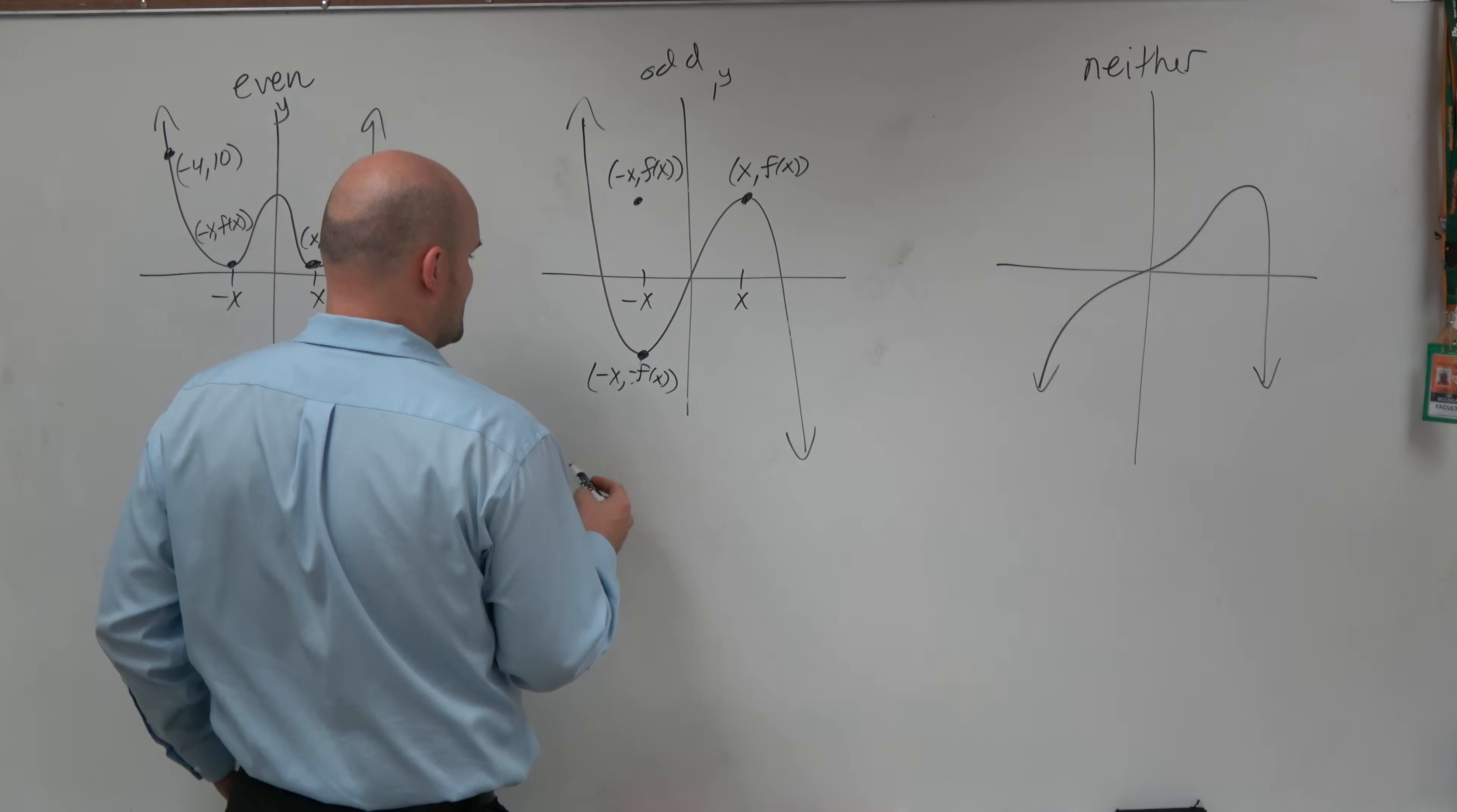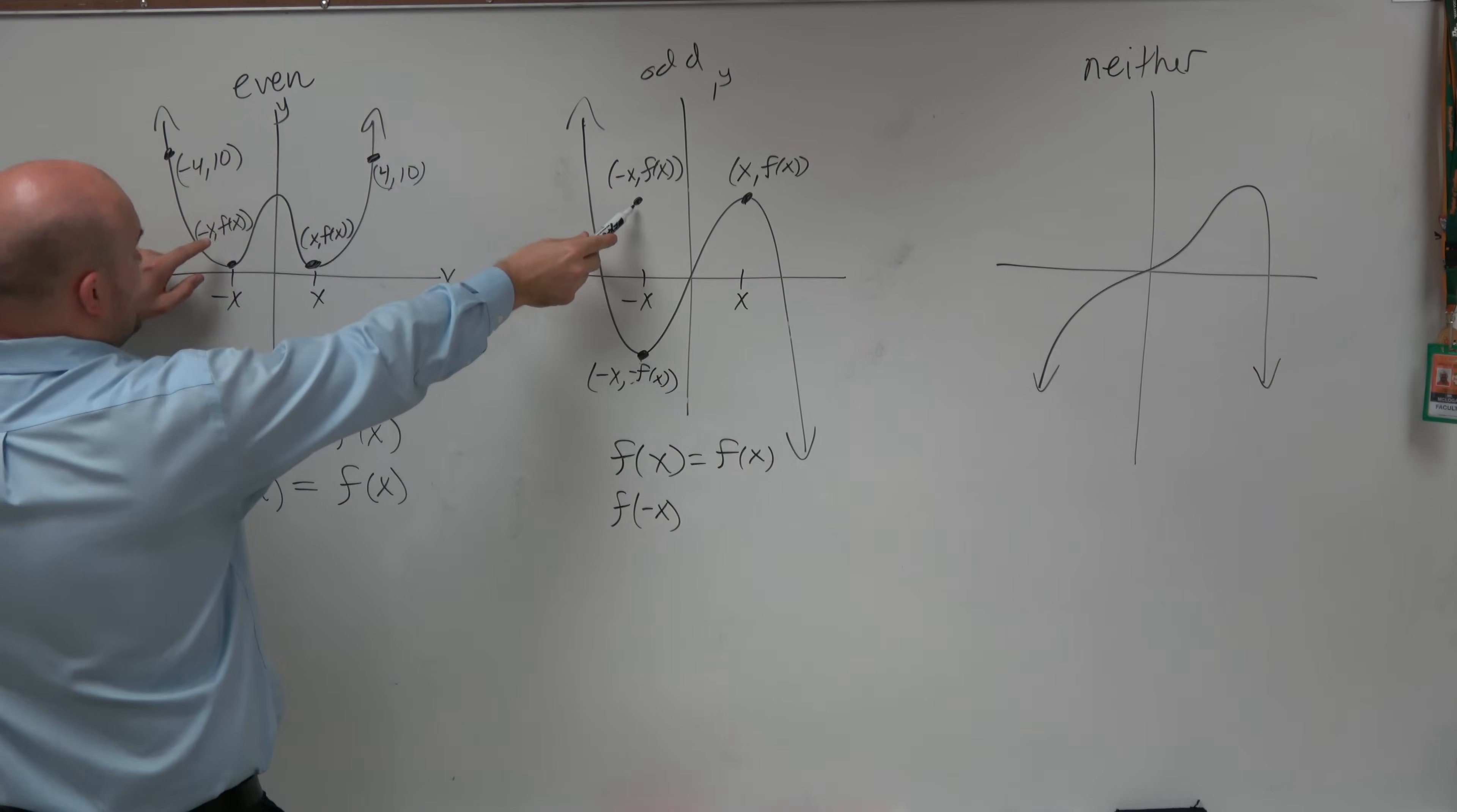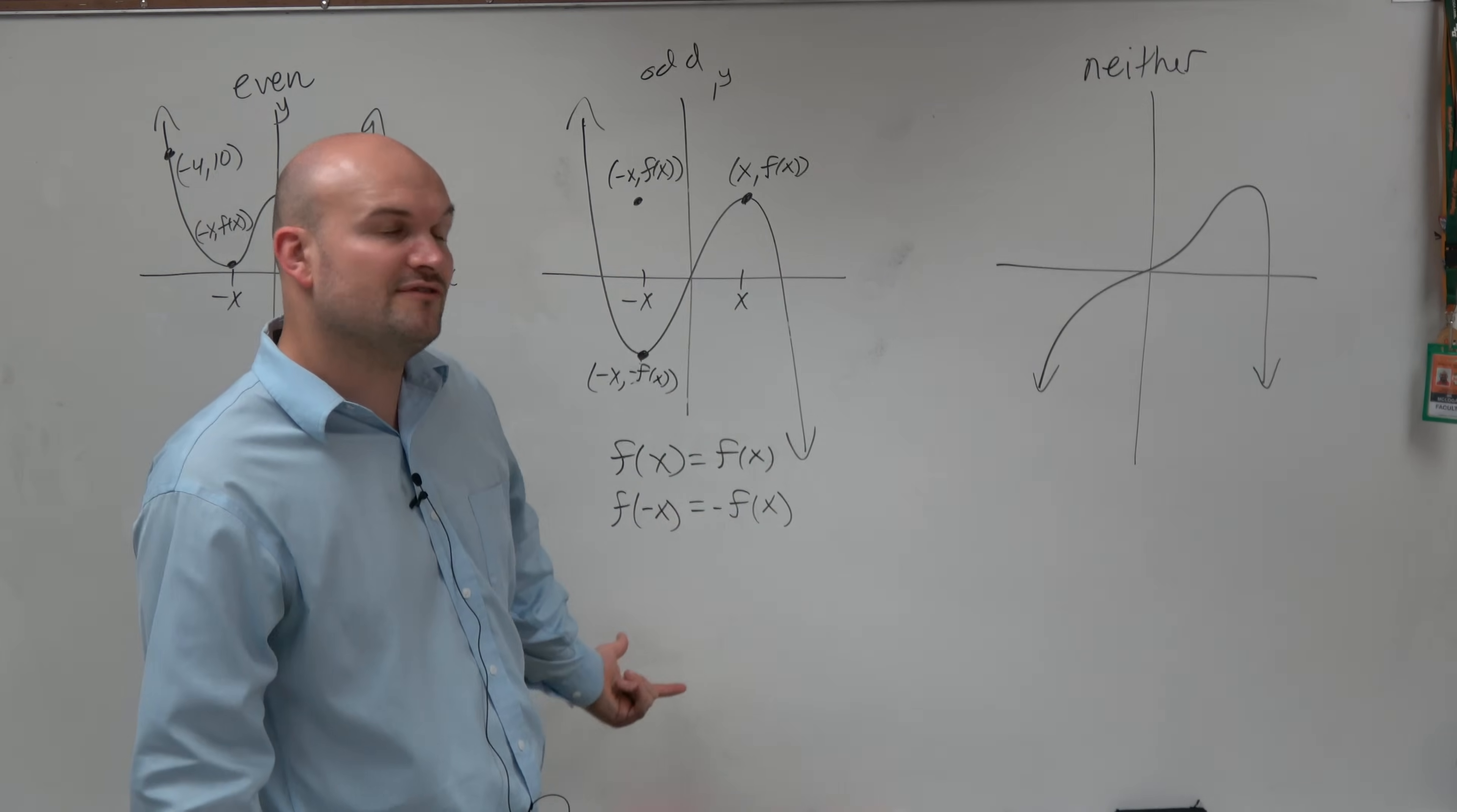So the definition here of an odd function is if I have f of x, I plug in f of x, I'm getting f of x. Well, if this function is odd, that means when I plug in f of negative x, I shouldn't get up here. If I get the same value, then it'd be even. If I get the opposite of f of x, then the function is odd. So what you're going to do is plug in negative x, evaluate the function, and therefore if you get the opposite of the original function, then the function is odd.